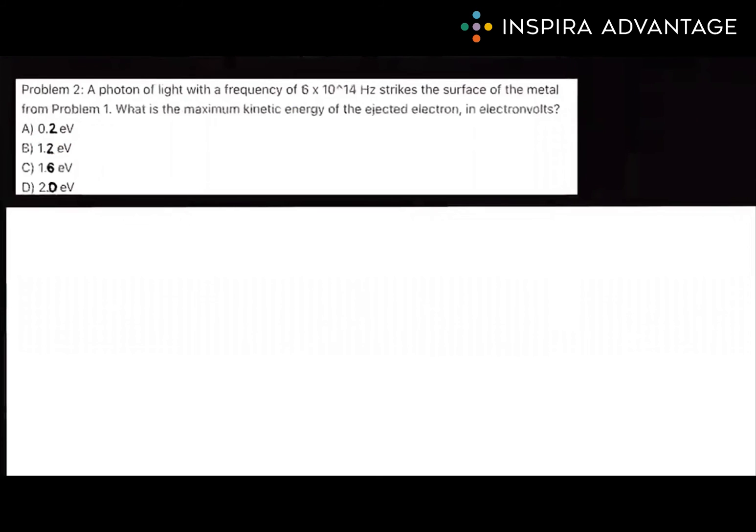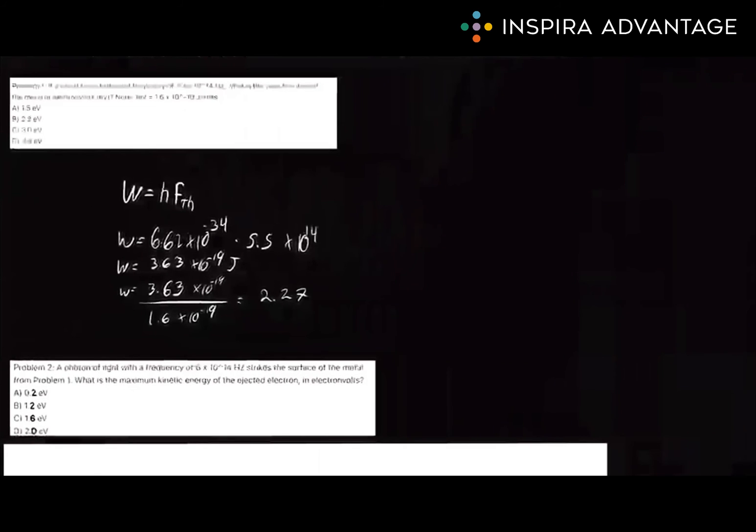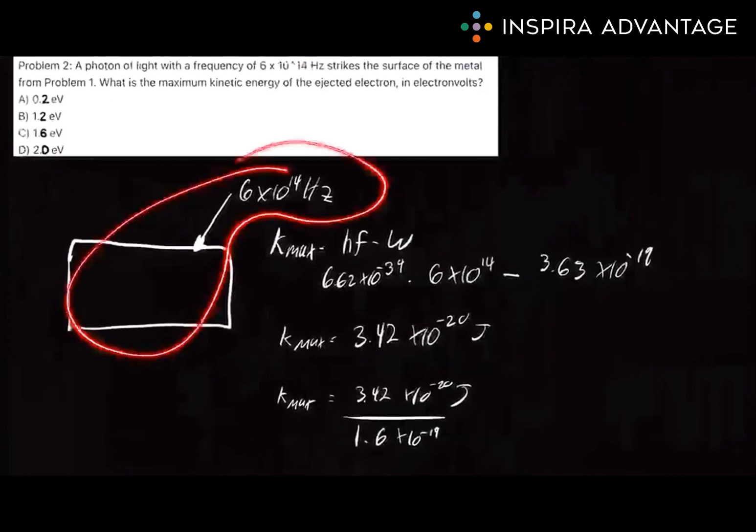On to one more bonus problem, because I really want to make sure that this makes sense for you. A photon of light with a frequency of 6 times 10 to the 14th hertz strikes the surface of the metal from problem 1. What is the maximum kinetic energy of the ejected electron in electron volts? I'll show you both problems. Now feel free to pause the video and try and solve this on your own.